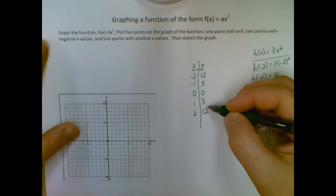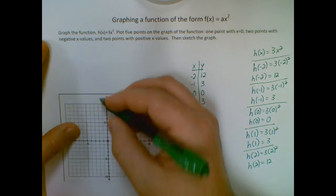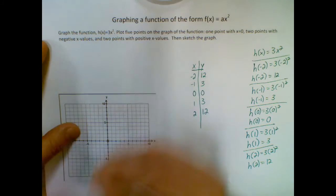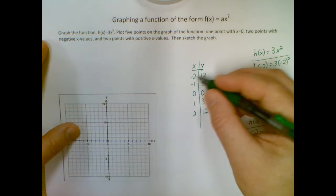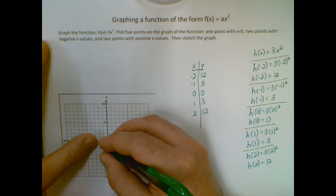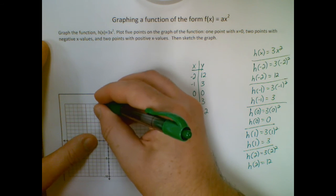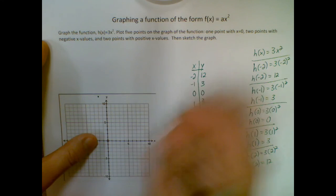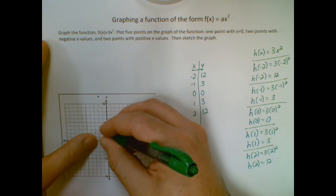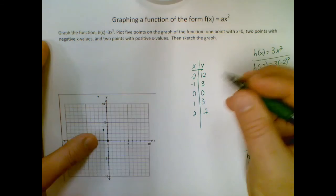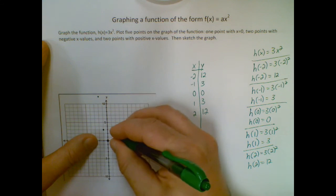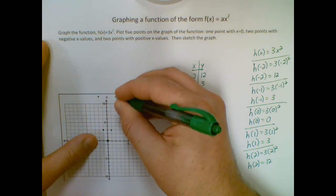Alright so now graphing them over here. I can't quite hit twelve, it's a little past my graph so I'm going to estimate those, but okay. So negative two twelve, so two and ten and I need to go up a little two more. Negative one three, zero zero, one three, and two twelve.